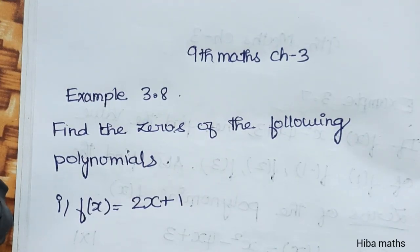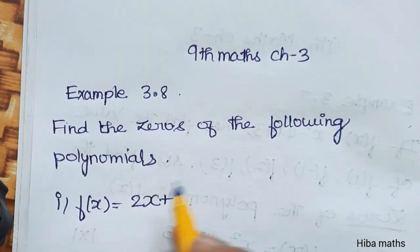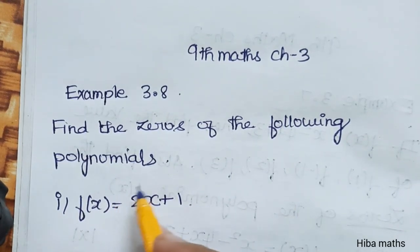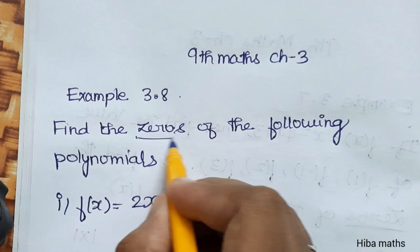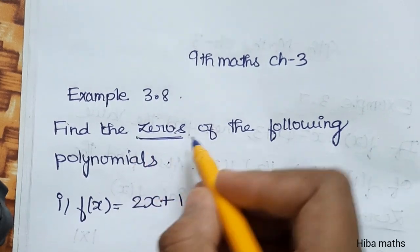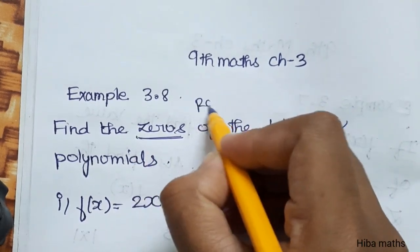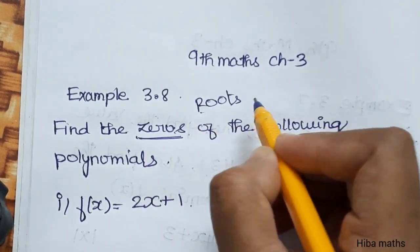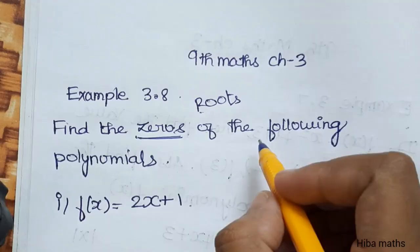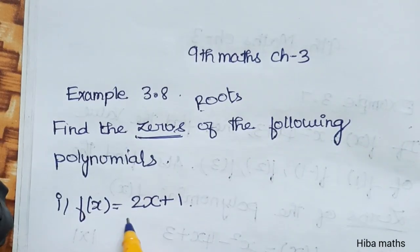3.8: Find the zeros of the following polynomial. The zeros and roots of the polynomial — what is the polynomial?